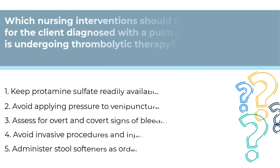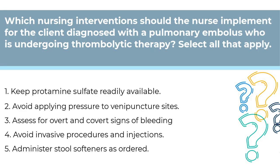Here's our final question. Which nursing interventions should the nurse implement for a client diagnosed with a pulmonary embolus who is undergoing thrombolytic therapy? Select all that apply. Number one, keep protamine sulfate readily available. Number two, avoid applying pressure to venipuncture sites. Number three, assess for overt and covert signs of bleeding. Number four, avoid invasive procedures and injections. Number five, administer stool softeners as ordered.